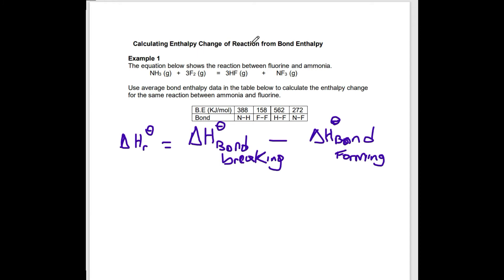We take bond enthalpy from a positive point of view in that we're talking about bond dissociation energy—the energy required to break a bond. So if you form the bond, it's going to be negative. This is your overall equation when you calculate enthalpy change of reaction from bond enthalpies.